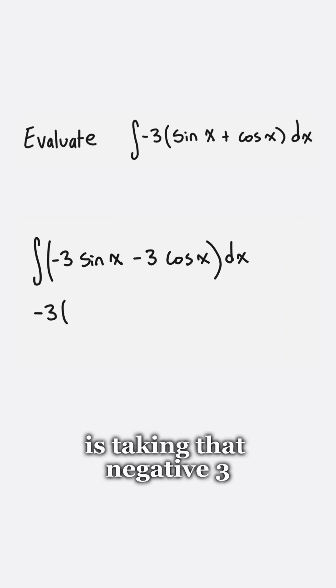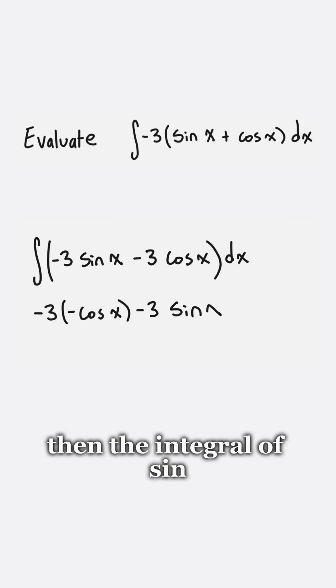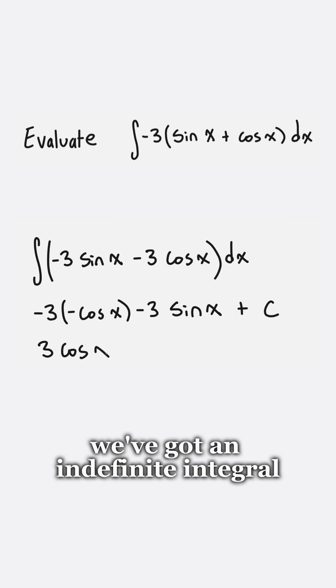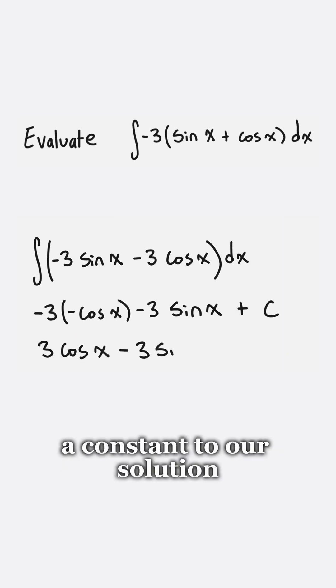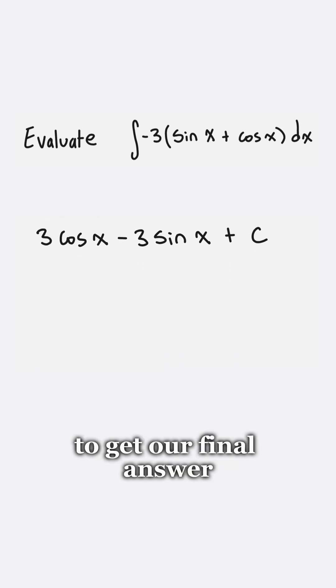The first thing that I'm doing here is taking that negative 3 and multiplying it into the sine and cos terms. Then the integral of sine is going to be negative cos, and the integral of cos is going to be positive sine. We've got an indefinite integral, so we need to add a constant to our solution, which is our plus C. Then we can clean this up a bit to get our final answer.